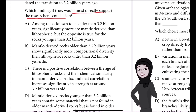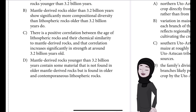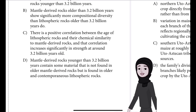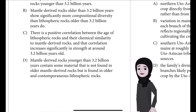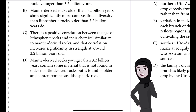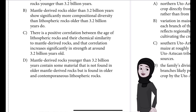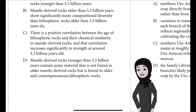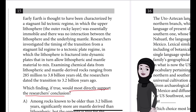Answer choice B: Mantle-derived rocks older than 3.2 billion years show significantly more compositional diversity than lithospheric rocks older than 3.2 billion years do. Choice C: There is a positive correlation between the age of lithospheric rocks and their chemical similarity to mantle-derived rocks, and that correlation increases significantly in strength at around 3.2 billion years old. Choice D: Mantle-derived rocks younger than 3.2 billion years contain some material that is not found in older and contemporaneous lithospheric rocks.